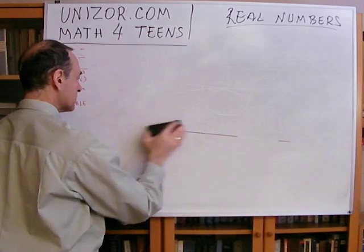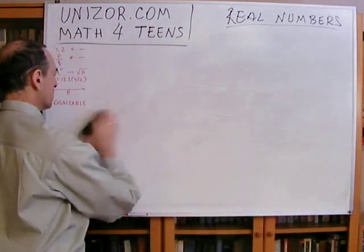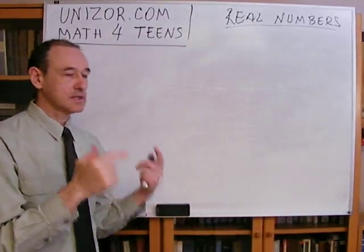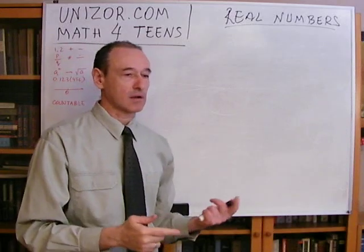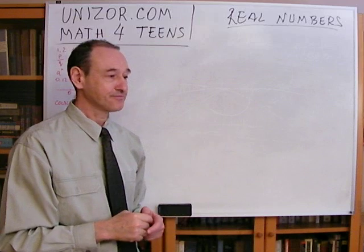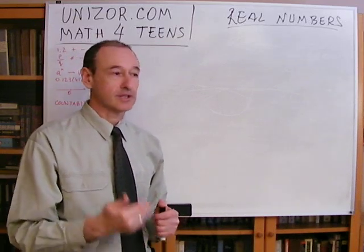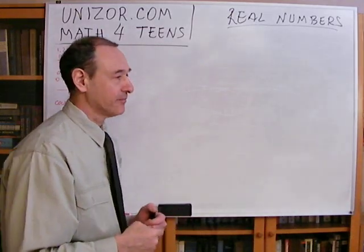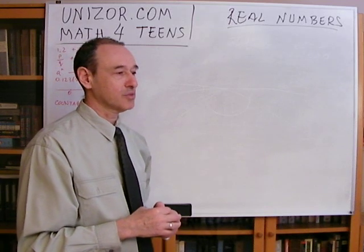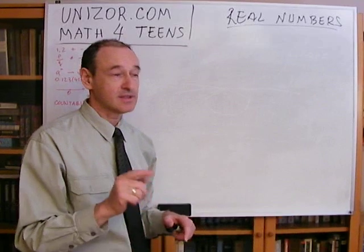So the number of elements in all these sets — the set of real numbers, the set of points in a segment, a semicircle, a circle, or an entire infinite line — is exactly the same type of infinity called continuum. And out of curiosity, if you think about how many points are on a plane, it's still the same continuum.